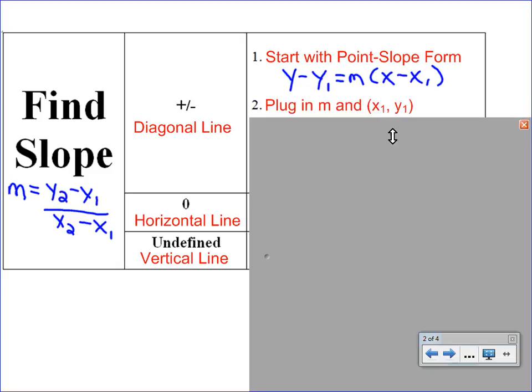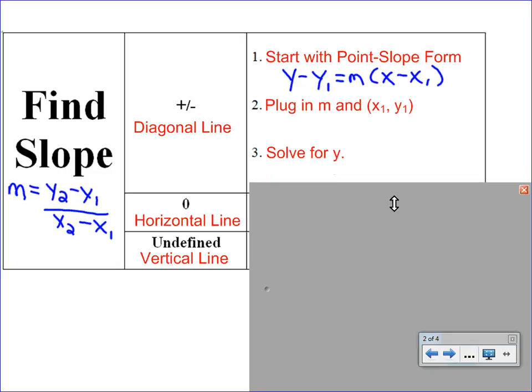Step two is to make some substitutions. You're going to plug your number for slope in place of m, and then plug the numbers for x1 and y1 into that equation. Step three, once you have those plugged in, is to solve for y. The reason we want to solve for y is to get back to slope-intercept form, y equals mx plus b. This connects back to graphing where you just had to find the slope and the y-intercept and plug it in.